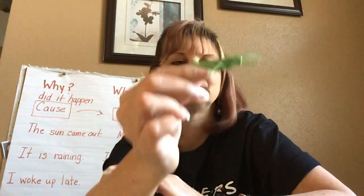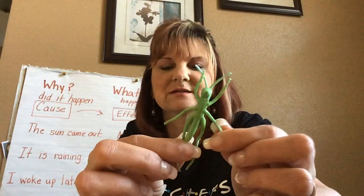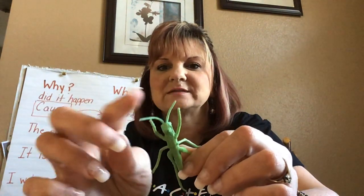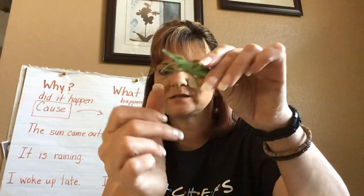Our main character is Inspector Hopper, who is a detective. He helps solve mysteries, so there's gonna be a mystery to solve in this story. Here's a grasshopper. A grasshopper is an insect because he has six legs, three on each side. He has little antennas, a head, a thorax, and an abdomen. So Inspector Hopper is our grasshopper character. Then we have McBug — he's a ladybug. So a ladybug is in this story.